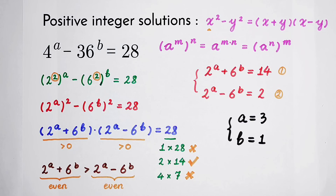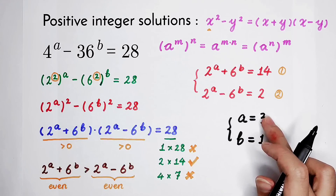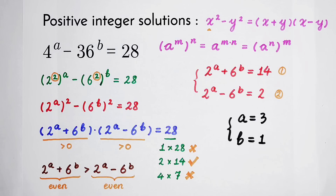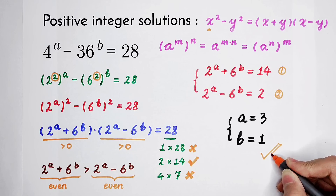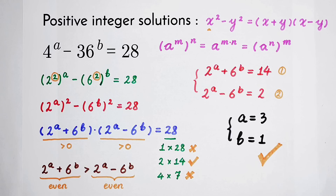You can do a check by substituting back: 4 to the power of 3 minus 36 to the power of 1 equals 64 minus 36 equals 28. It checks out — we have solved the equation! Did you get it? Give me a thumbs up, subscribe to my channel for more videos, and we'll see you next time. Bye-bye.